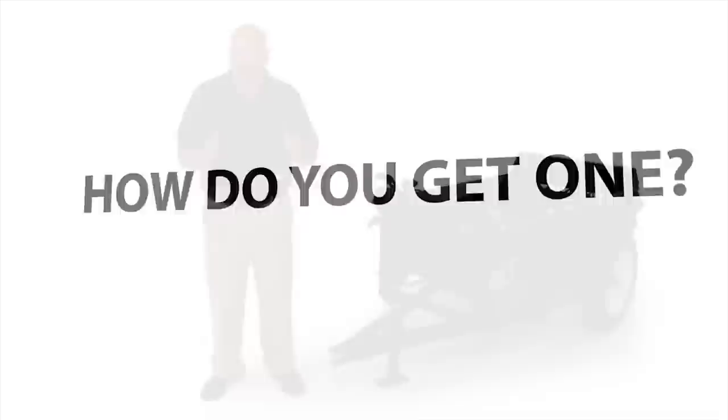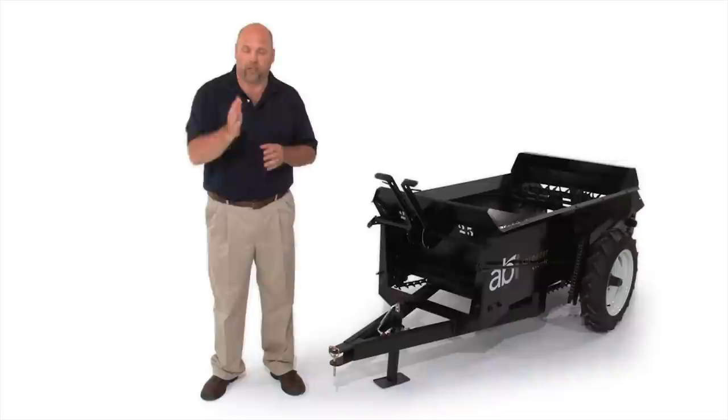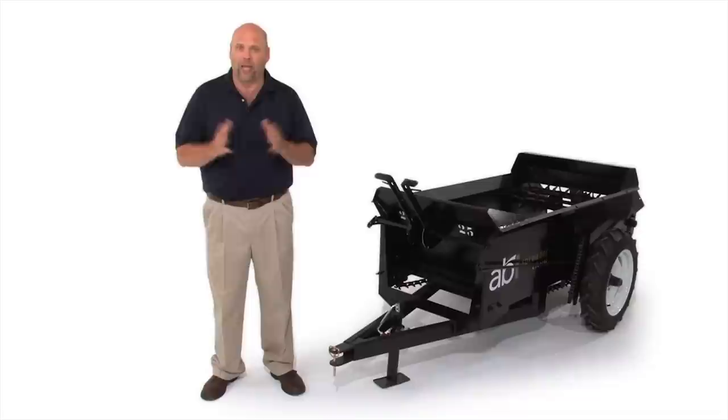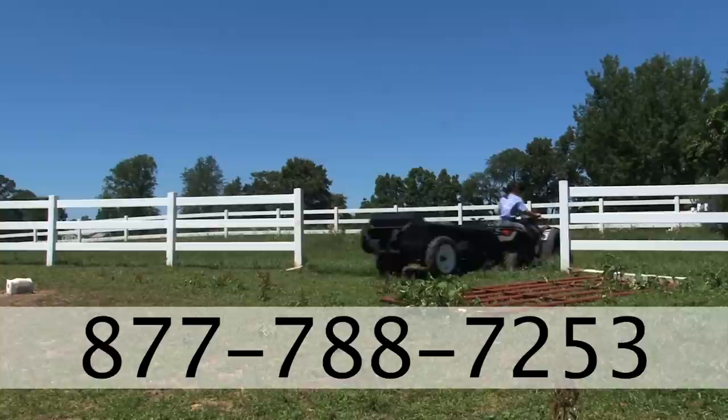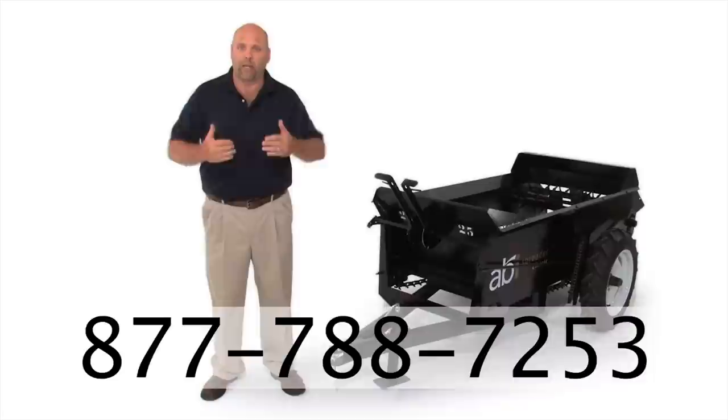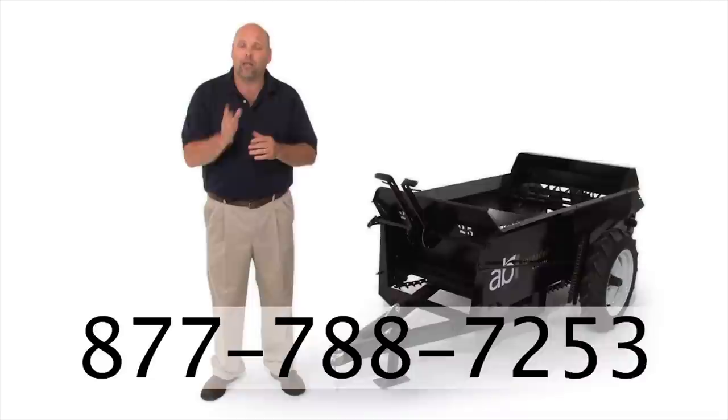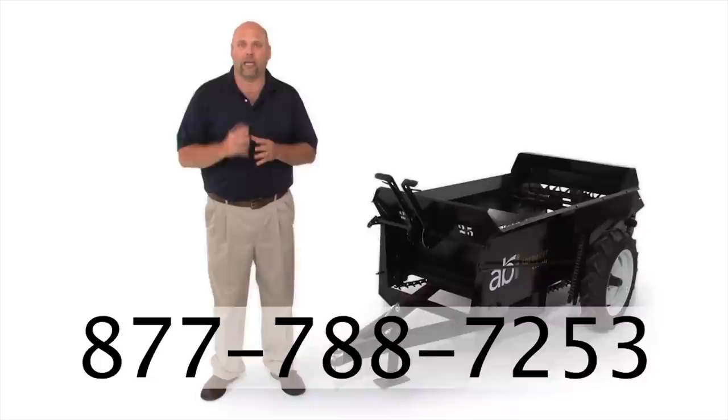Hopefully by now you are a believer that the ABI classic spreader is the very best spreader with its design. So how do you get one of your very own? Well I have one more benefit to share with you and that's that we sell direct to you. We eliminate the markup of a middleman or a dealer so you get a much better quality, a higher quality product for a very competitive price. So you need to call us at our toll free number which is 877-788-7253. We want to know what your tow vehicle is, we want to know how you're going to use it, how many horses you have, what options you might need so that when we guarantee it, it'll work. Call to find out about our financing and our money-back guarantee and how to get the ABI classic spreader for your very own.